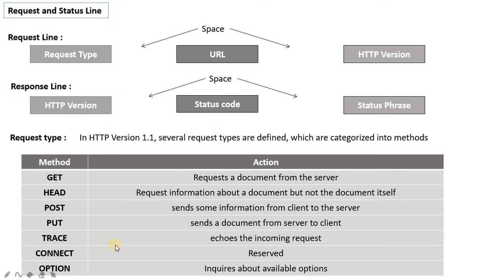The second component of the request line is the URL, which we have studied in detail — it specifies the location of the document on the server. The third component is the HTTP version, which indicates which version of HTTP is being used.